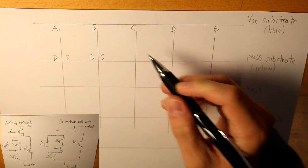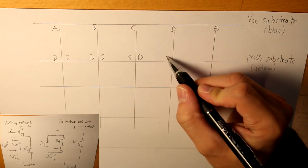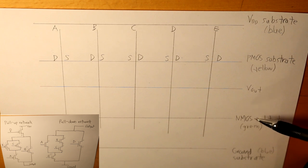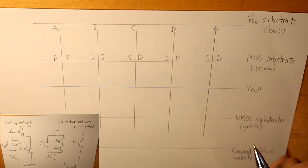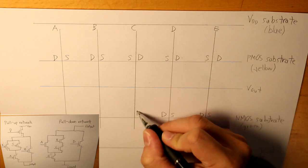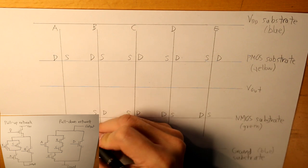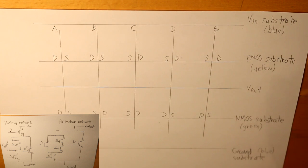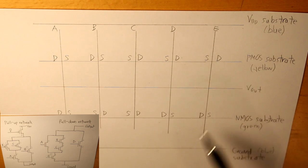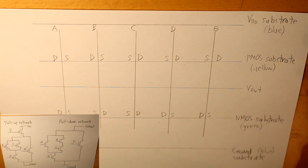For B, we label the drain and source sides. For C, we label its sides as well. Then for our NMOS substrate, we do the same thing and label accordingly. I'm doing this quickly because I've already worked it out — this coordination produces the most simplified design of the stick diagram.